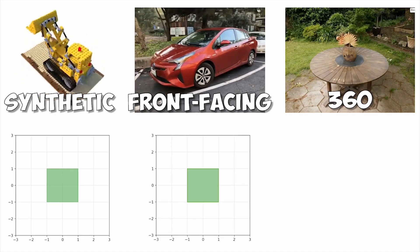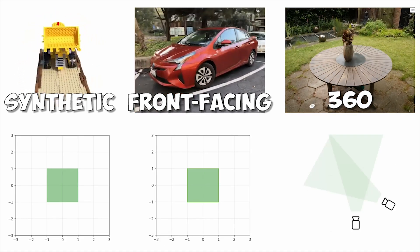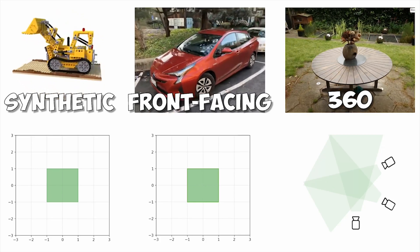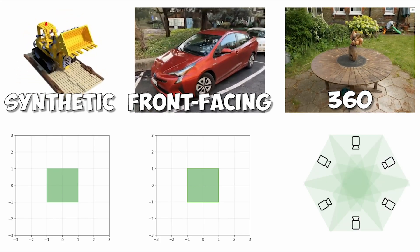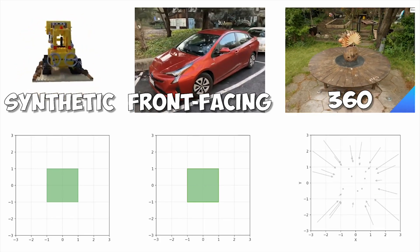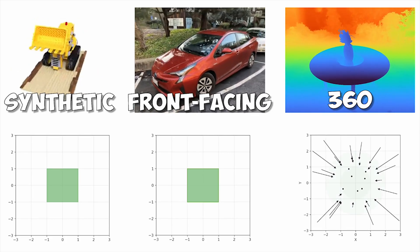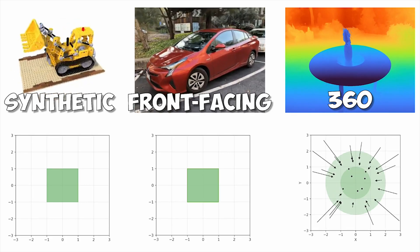For 360 unbounded scenes where the cameras point inward, MipNERF 360 proposed a contraction operation to smoothly warp the space into a bounded domain.